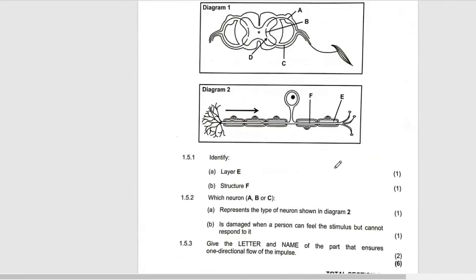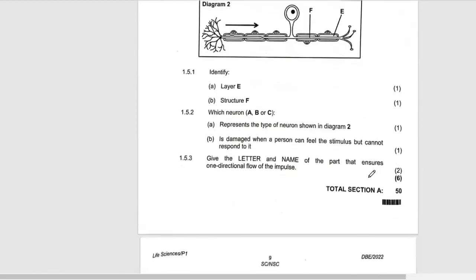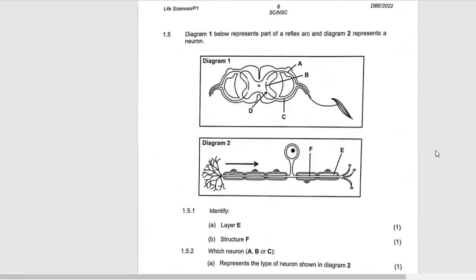So the answer is going to be C, which is the motor neuron. And then lastly, give the letter and the name of the part that ensures one directional flow of impulse. One directional flow of impulse is being done by the synapse. The major function of the synapse is to connect the two neurons and to allow the impulse to move in one direction.